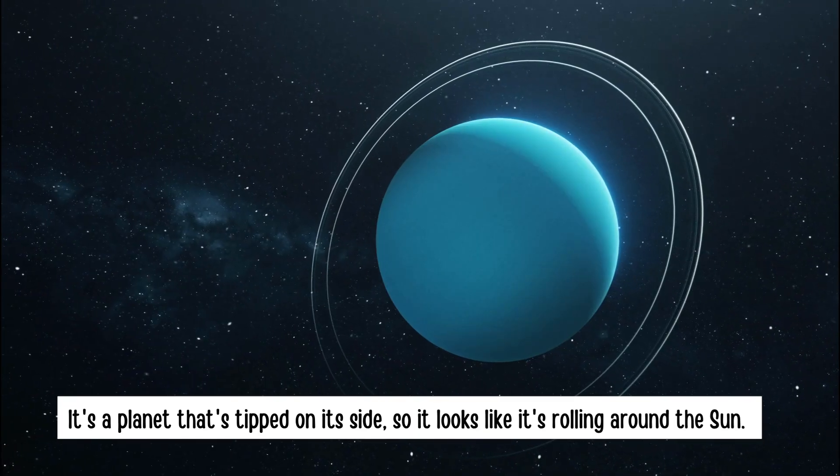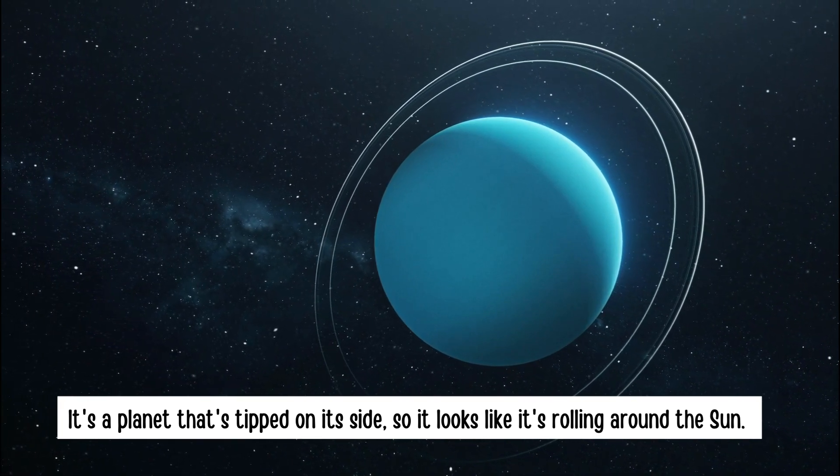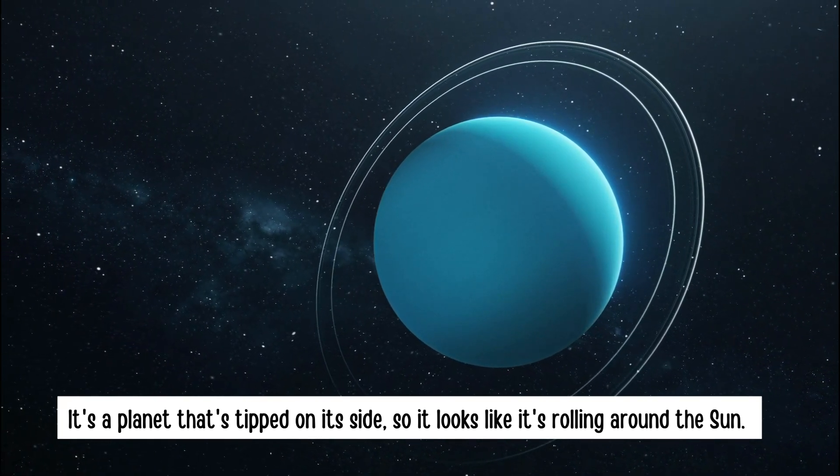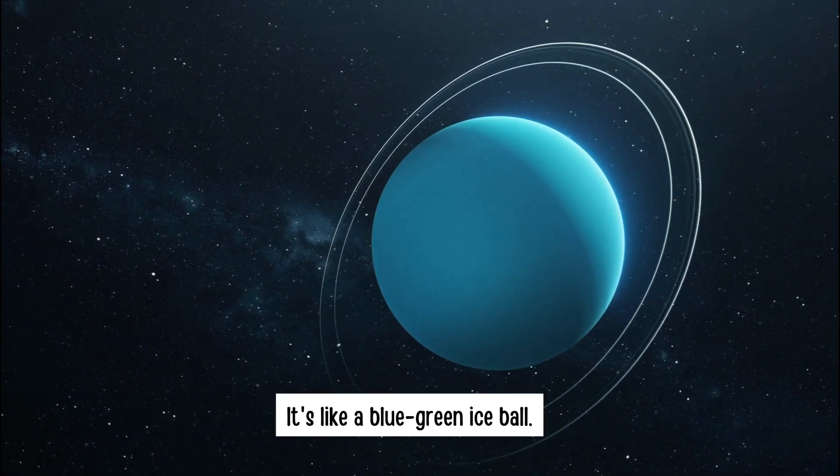Uranus. It's a planet that's tipped on its side, so it looks like it's rolling around the sun. It's like a blue-green ice ball.